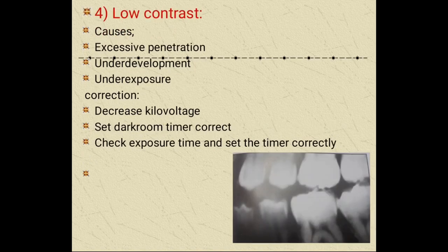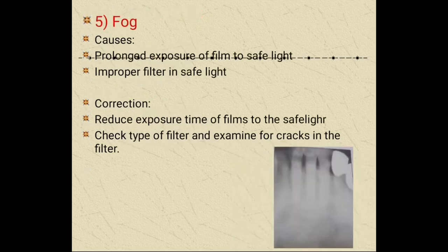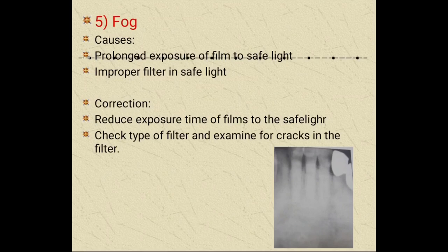Low contrast shows very low contrast, also not giving any details. Causes are excessive penetration, under-development, under-exposure. Correct by decreasing kilovoltage, setting the darkroom timer correctly, and checking and setting the exposure time correctly. Fogging of the film shows a fog-like appearance. Causes include prolonged exposure of film to safe light and improper filter in the safe light. We can correct it by reducing the exposure time of films to the safe light, and checking the type of filter and examining for cracks in the filter.